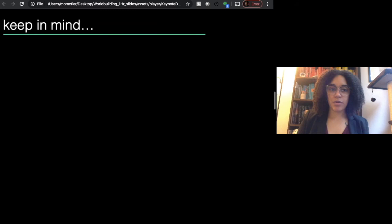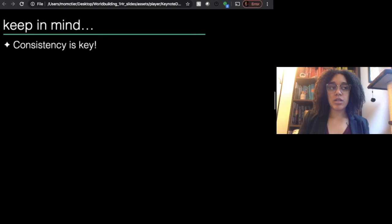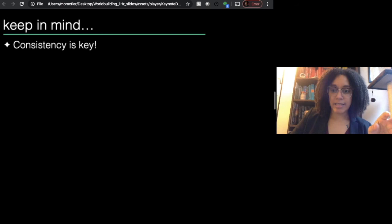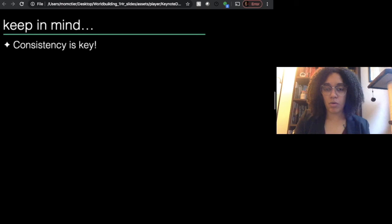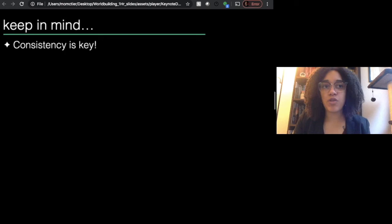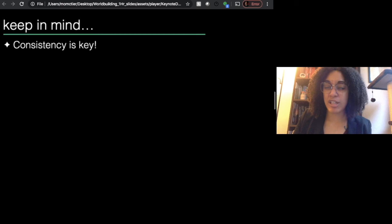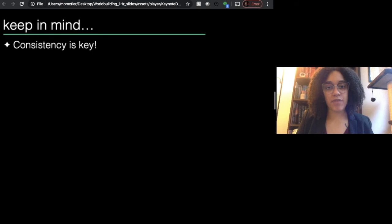Now I have some key things I want you to remember. First: consistency is key when you are building your world. Come up with the rules for your world and stick to them. This doesn't have to mean political laws — it means things like: if you create a system of magic where magic is passed down genetically through families, don't later have a person who has magic but isn't related to anyone with powers. Or if you create a world where people value shiny things, don't later have the biggest city in this world be very dull, drab, and colorless. So consistency is key — make sure you stick with what you decide early on.